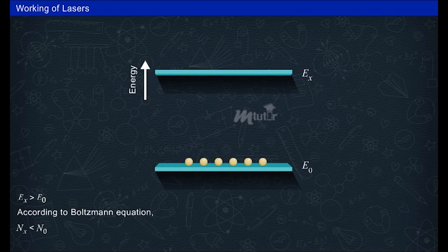This means there will be less number of atoms in the excited state compared to the ground state. Thus only by thermal agitation, the population of E_x cannot exceed that of E_0.